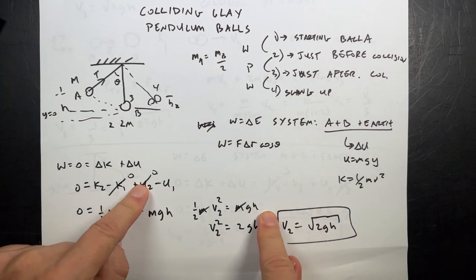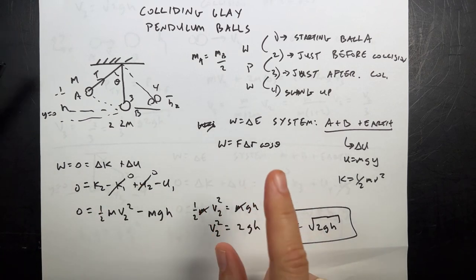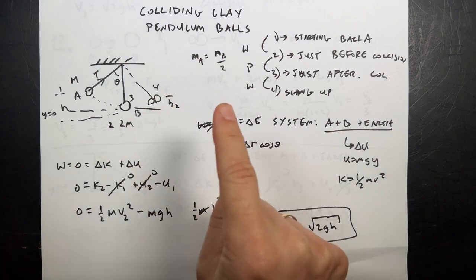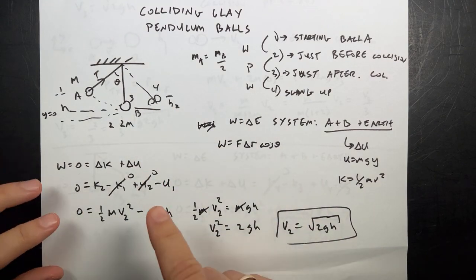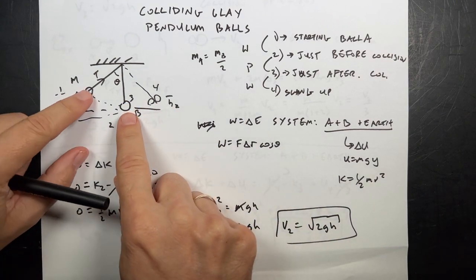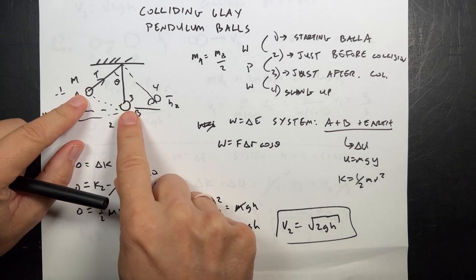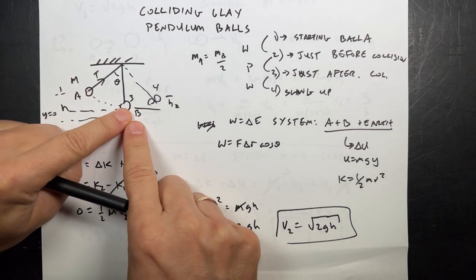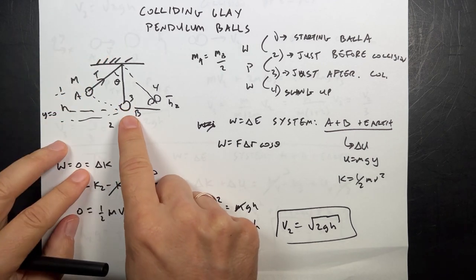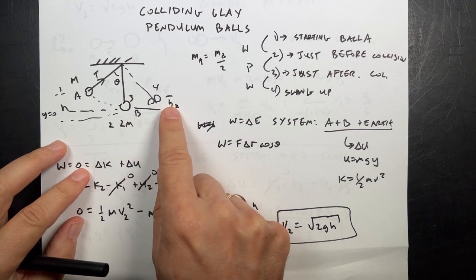I want to redo this problem with a twist. So the problem I did — I'll link to the video down below — there's two balls of clay. This one swings down and collides and sticks with that one, and then the question is how high up does it go?